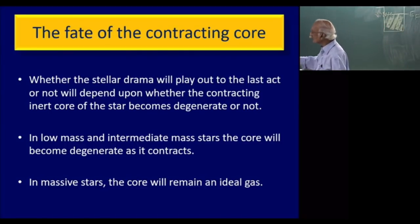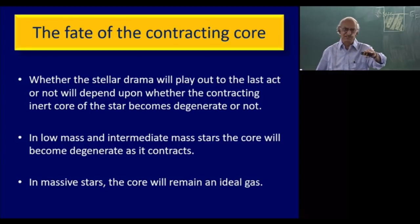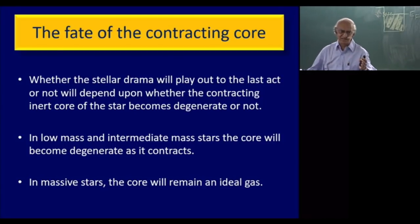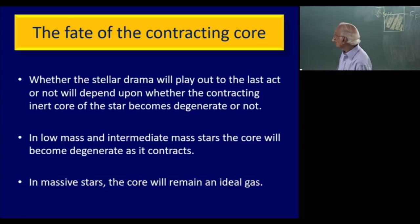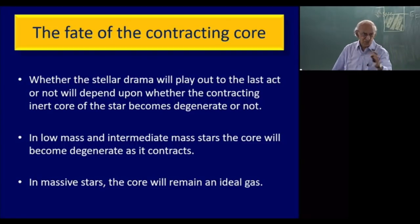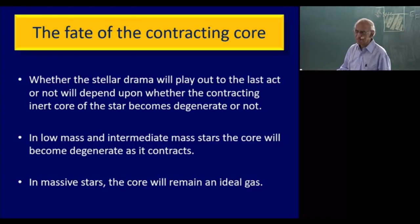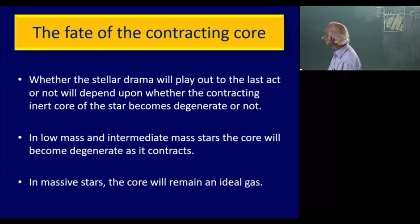In low-mass stars like the Sun, and also intermediate-mass stars of two or three solar masses, the core will become degenerate as it contracts. But if you go to massive stars — ten or twenty times the mass of the Sun — you will find that helium is still classical. That is due to one of Chandrasekhar's most profound discoveries. Let's try to understand the behavior of a classical gas and a quantum gas. At low densities and high temperatures, the gas is classical; at high densities, it is quantum mechanical. The condition KT = E_F separates the two regimes. E_F is proportional to density to the power 2/3 for non-relativistic gas, giving a slope of 2/3 in a log-log plot; for a relativistic gas, E_F ∝ ρ^(1/3), giving a slope of 1/3.